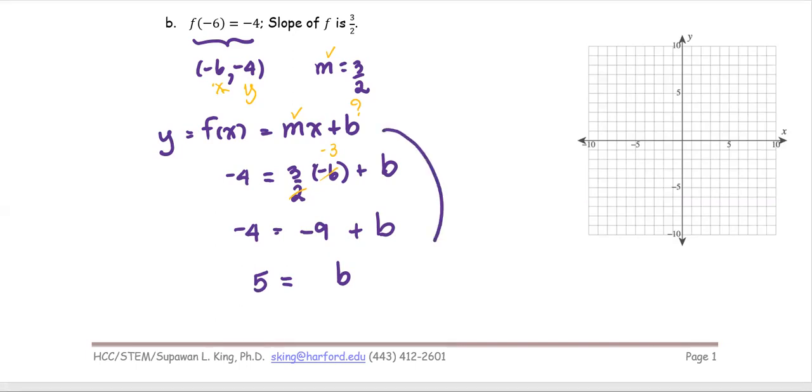Then we put them together into the form of the linear function, f(x) = (3/2)x + 5.